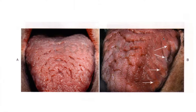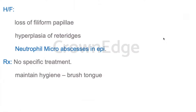In image A you can see a lot of fissuring on the tongue. In image B, fissured tongue is also associated with geographic tongue on the lateral border, where you see map-like areas with atrophic central areas and white peripheral areas. Histopathologically, fissured tongue shows loss of filiform papilla and hyperplasia of the rete ridges. Very importantly, neutrophil micro-abscesses called Munroe micro-abscesses are seen in the epithelium. There is no specific treatment; maintain hygiene and brush the tongue regularly.